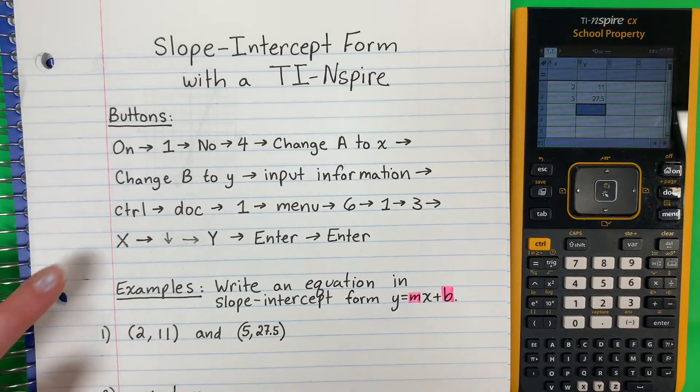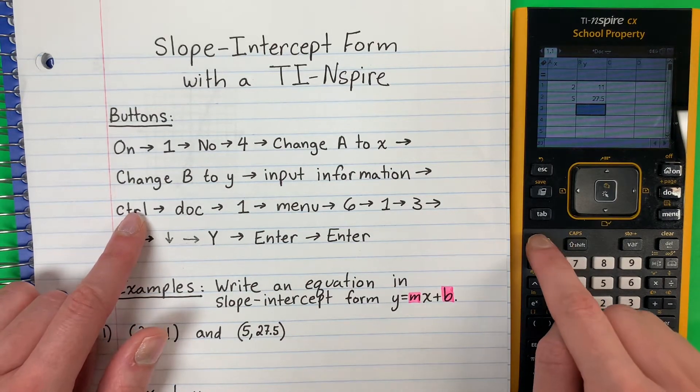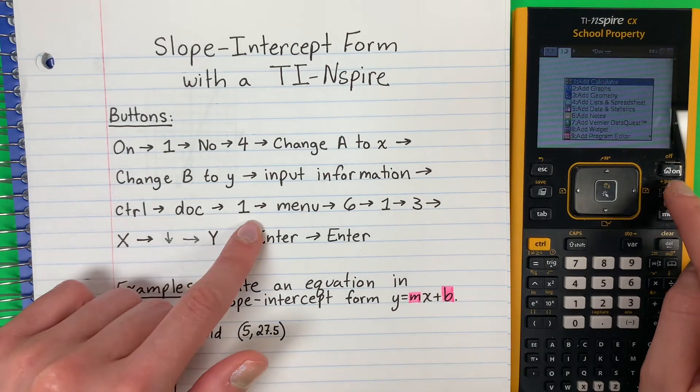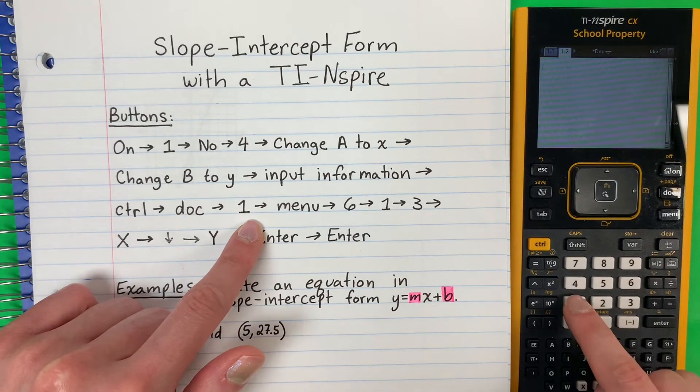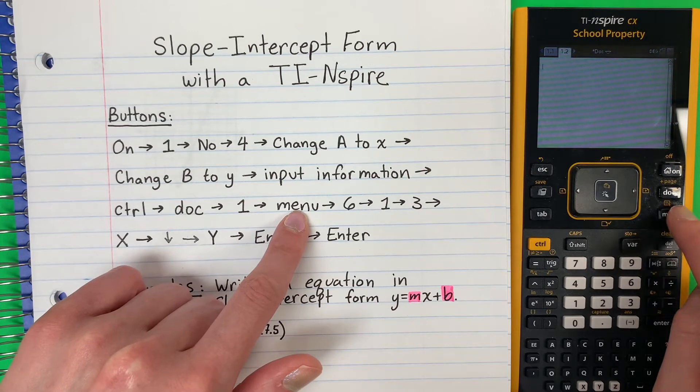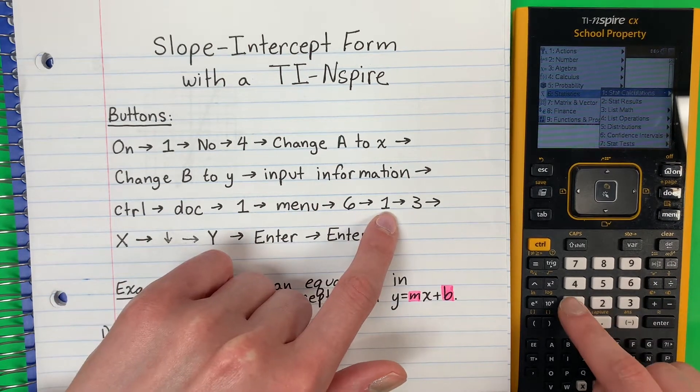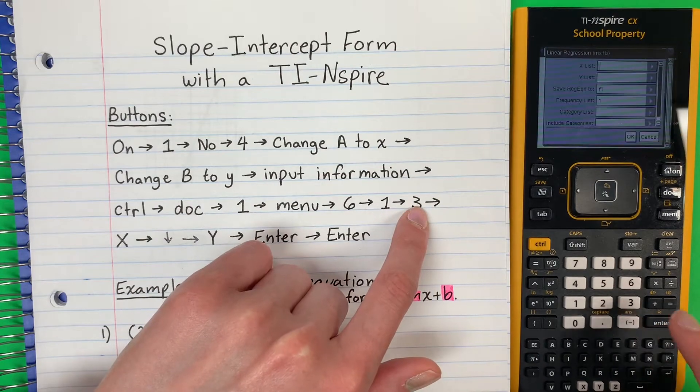Now, we're going to go ahead and do control, dock. You're going to need the number 1. You're going to do menu, 6, 1, 3.